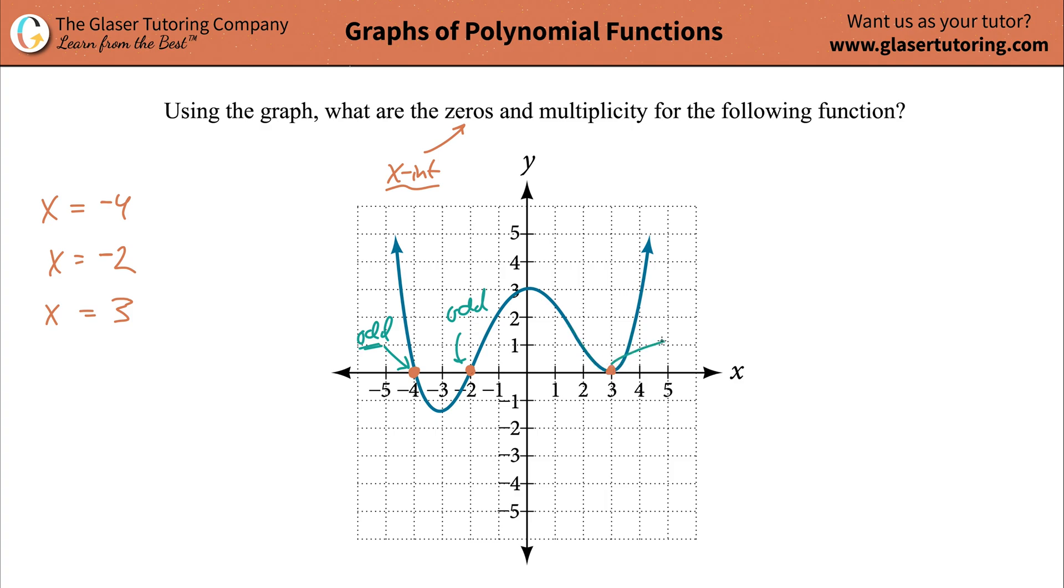Whenever it does a little bump-a-rooski, that's known as an even multiplicity. Now the question is, you might say, okay, odd's great, even's great, but you know, Andrew, there's a lot of odd numbers out there. There's a lot of even numbers also. How do you know which is which?